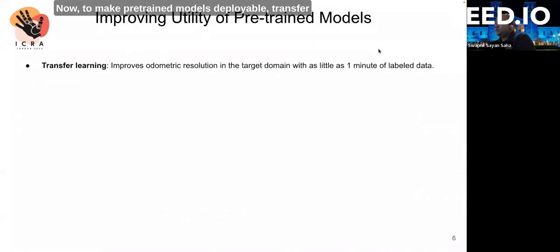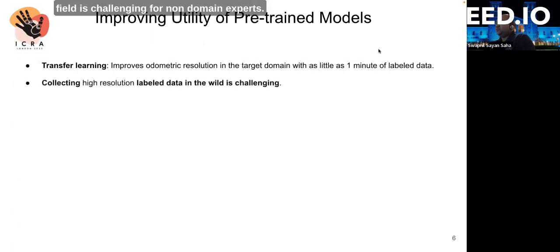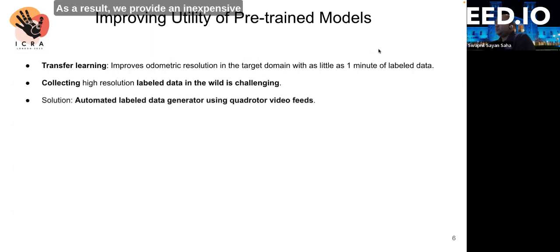Now, to make pre-trained models deployable, transfer learning allows domain adaptation with as little as one minute of labeled data. However, collecting labeled navigation data in the field is challenging for non-domain experts. As a result, we provide an inexpensive and automated video processing pipeline for farmers to collect labeled ground-truth position data using quadrotors for fine-tuning pre-trained odometry models for their own applications.